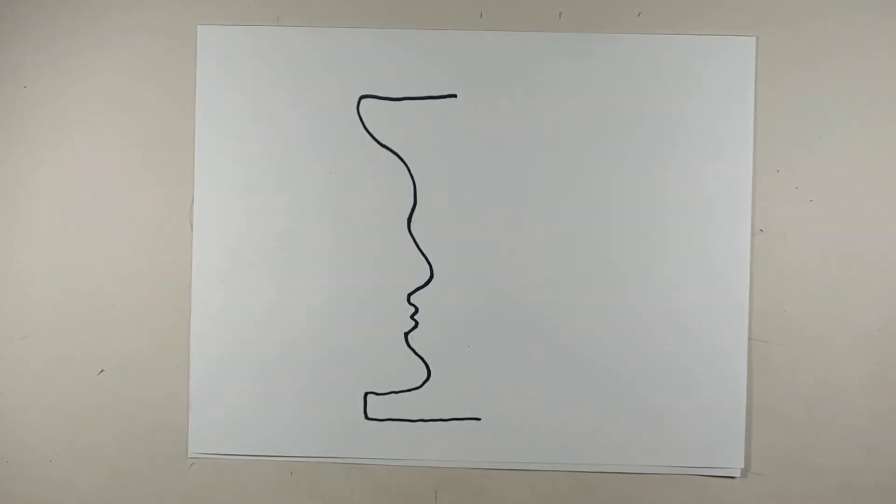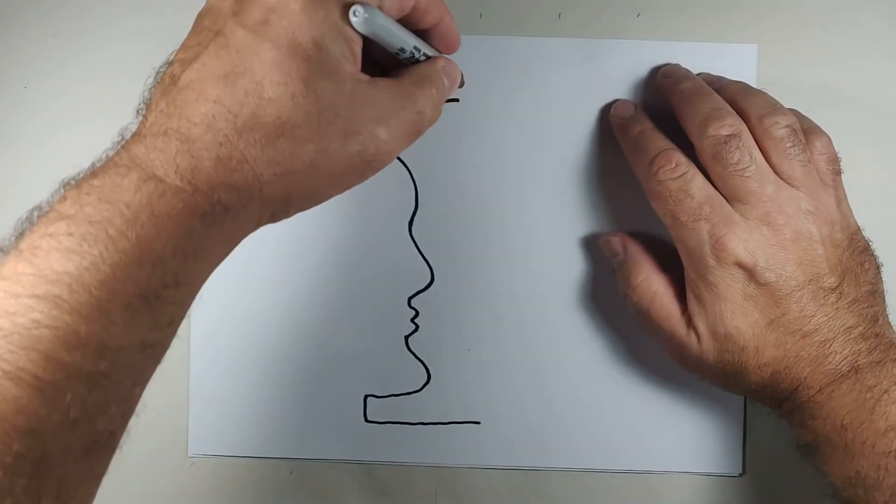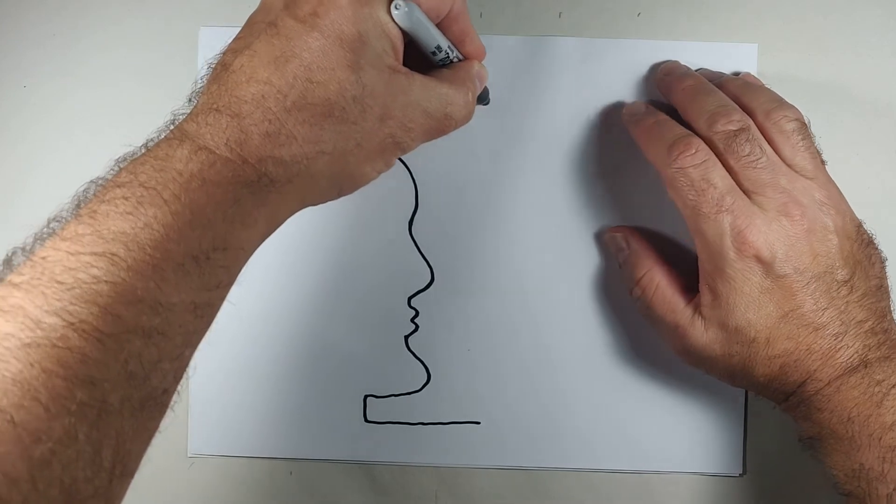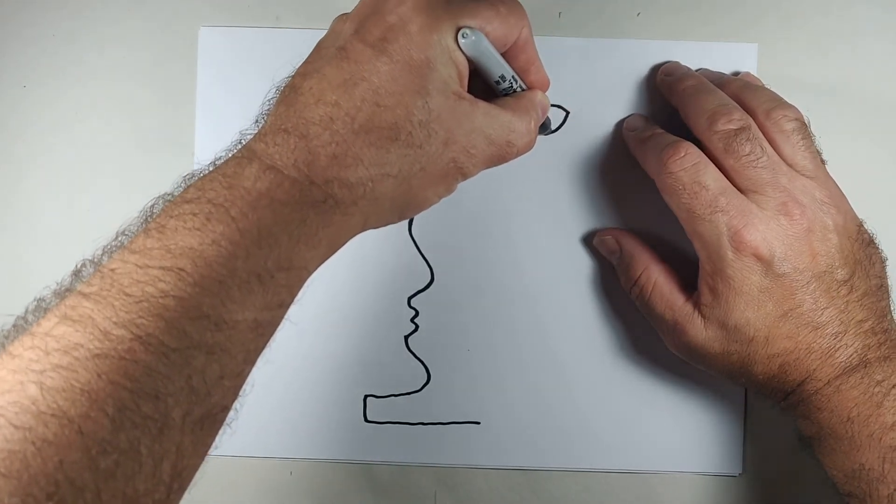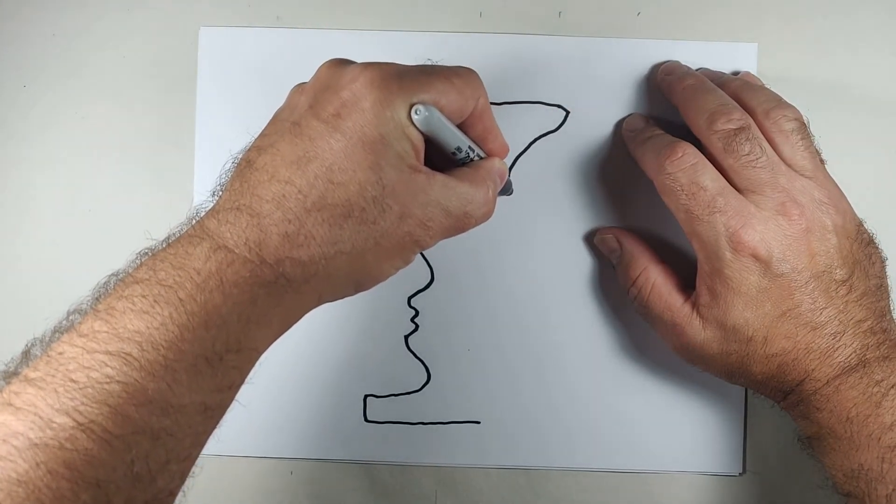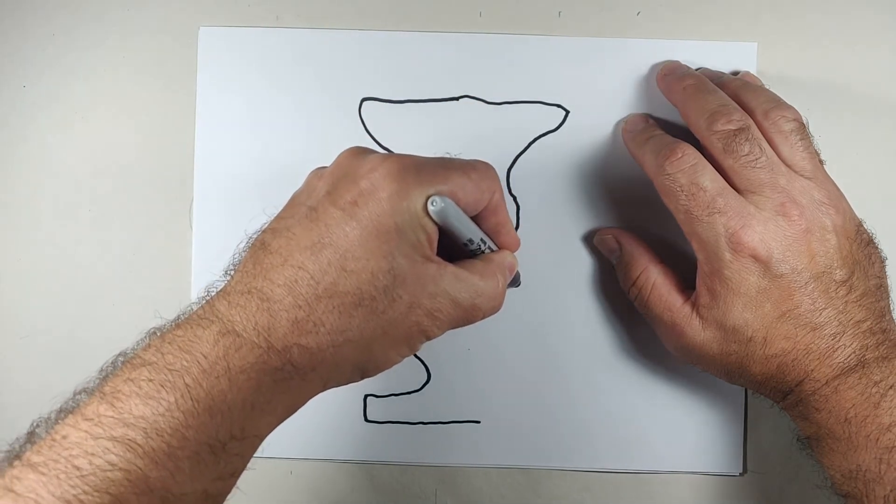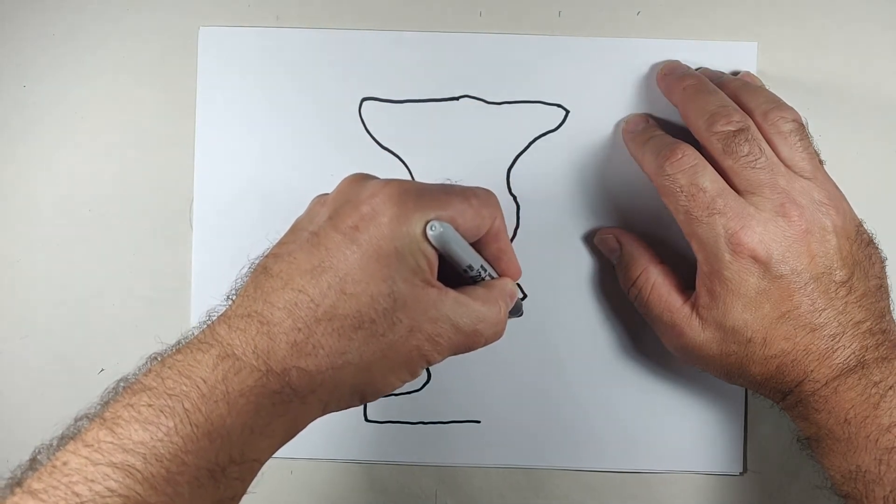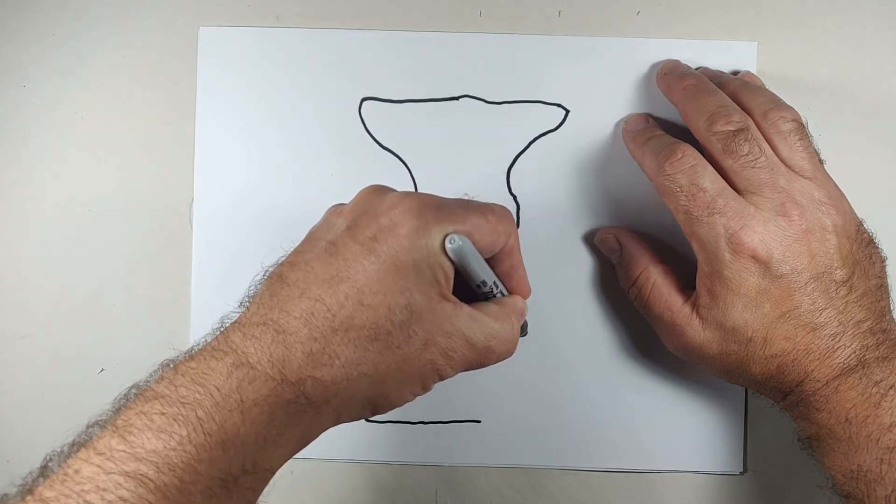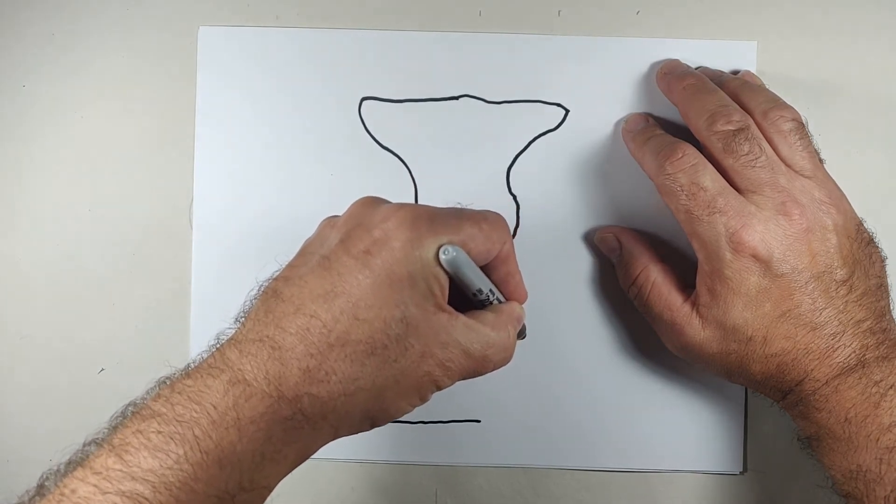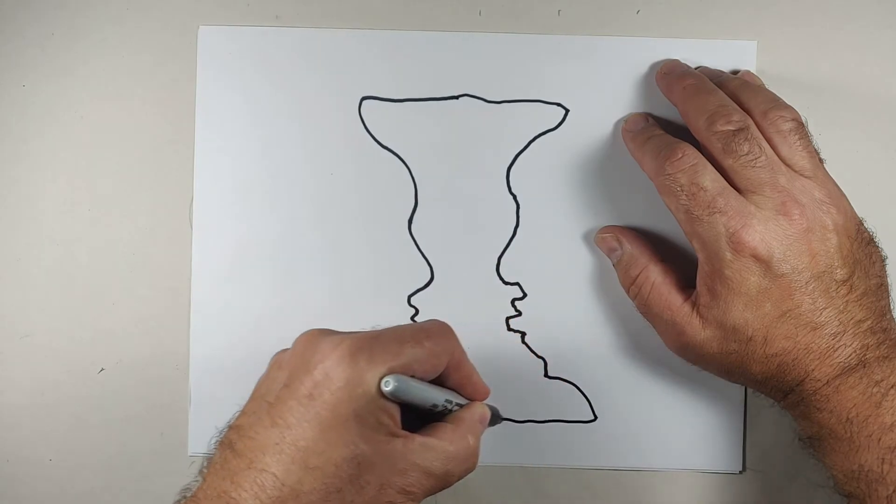There you go. With your opposite hand, you're going to draw the mirror image. It will probably take you a few times to do this because you might get a little confused with some spatial relationships and so forth, like what I did right there.